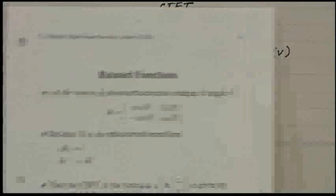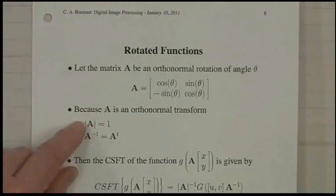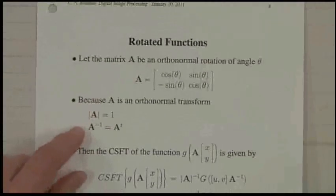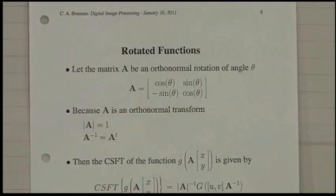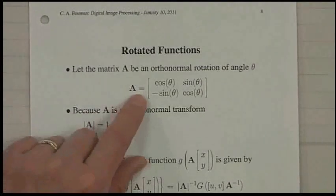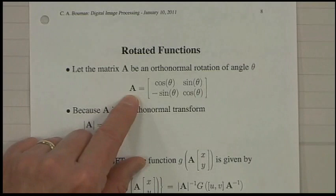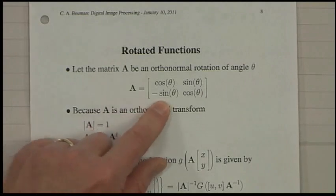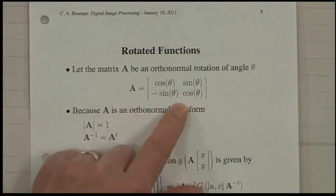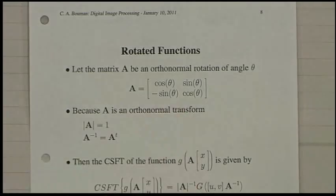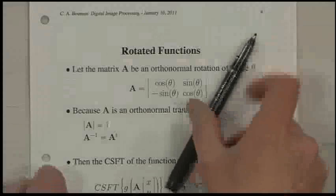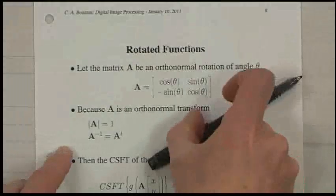I talked about rotation of functions. We talked about the relationship for scaling of functions. In the particular case where the matrix A is a rotation, this is how you parameterize an orthonormal rotation in two dimensions with a determinant of one — it's a rigid rotation. I always forget exactly how it works, so it's handy to be able to quickly re-derive it.